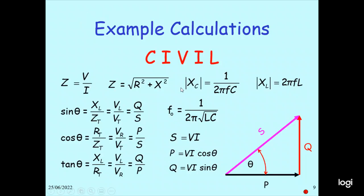So the special calculation: Z equals V divided by I, and Z equals the square root of R squared plus (XL minus XC) squared. This is the power triangle you can draw. S equals V times I; P equals V·I·cosθ; Q equals V·I·sinθ. S is the apparent power, V is the voltage, I is the current.